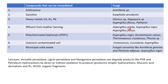For heavy metals like cadmium, zinc, and lead, Glomus and Gigaspora — which are mycorrhizal species — can be used, as well as Aspergillus flavus. For effluent from leather tanning, Aspergillus species such as niger, flavus, and giganteus are used. For polychlorinated biphenyls (PCBs/POPs), Aspergillus niger, Thermoascus crustaceus, or Phoma species are applicable. For uranium-contaminated soils, Cryptococcus, Aspergillus, and Curvularia can be used. For municipal solid waste, Armillaria gemina, Pholiota adiposa, and Aspergillus niger are options.